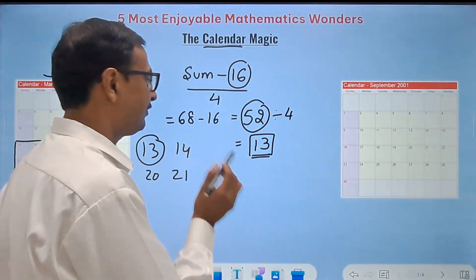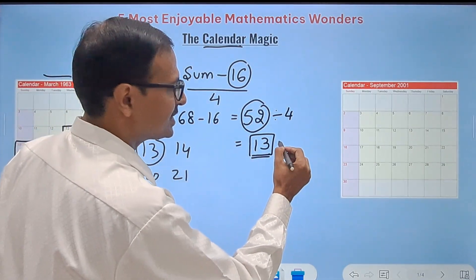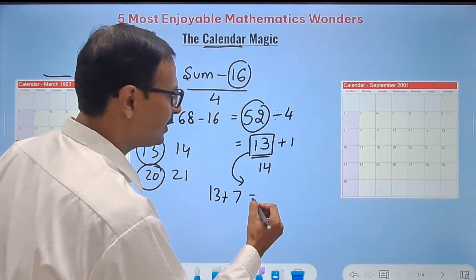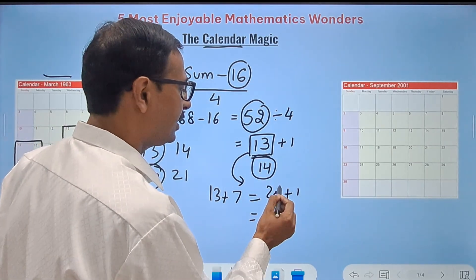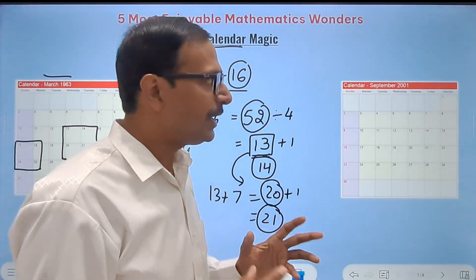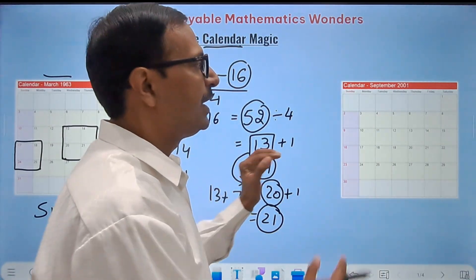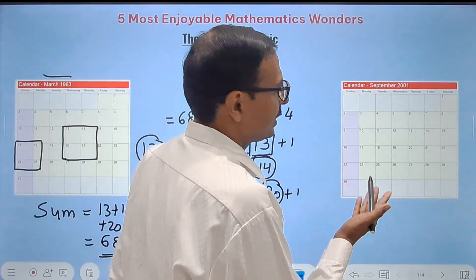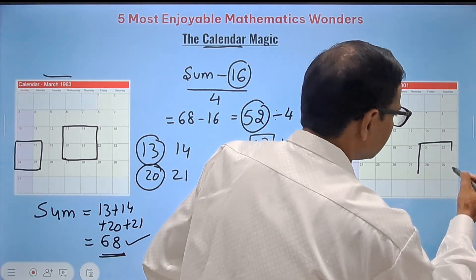You got the first number — 13. You always get the first number your friend chose when you subtract 16 from the sum and divide by 4. To find the remaining numbers: add 1 to get 14, add 7 to get 20, and add 1 more to get 21. So the four numbers are 13, 14, 20, and 21 — you can tell them in a flash! Just practice this and it will be really amazing.